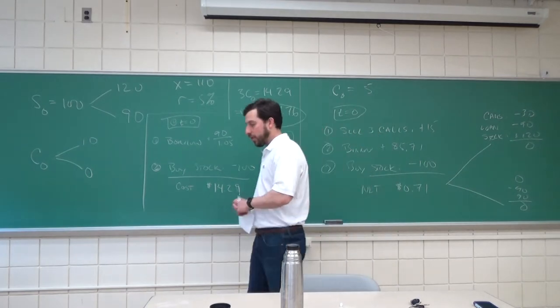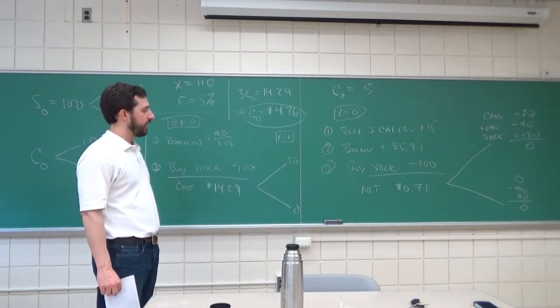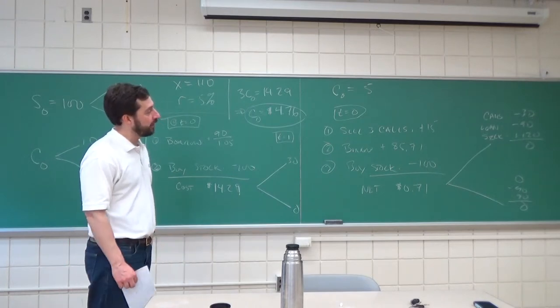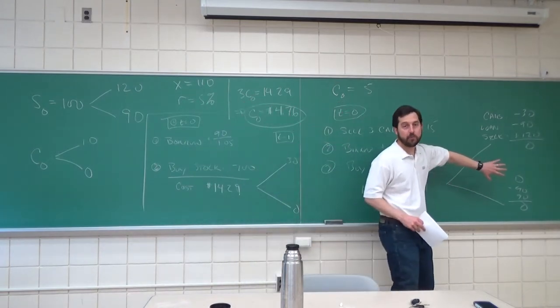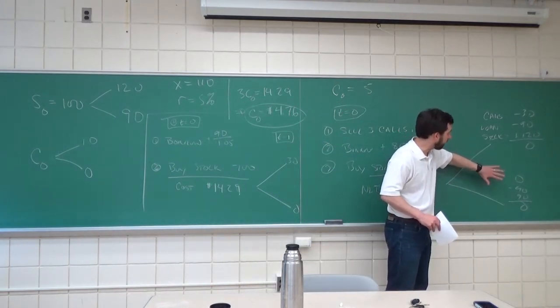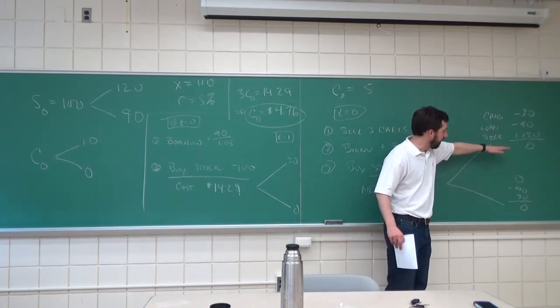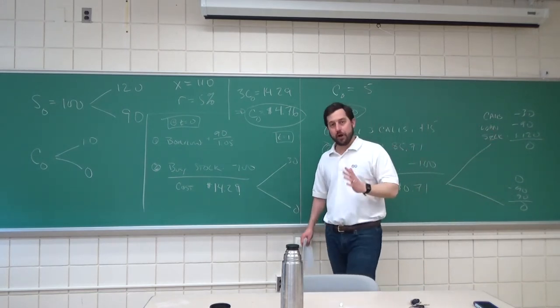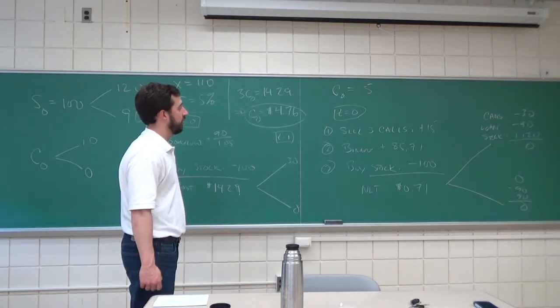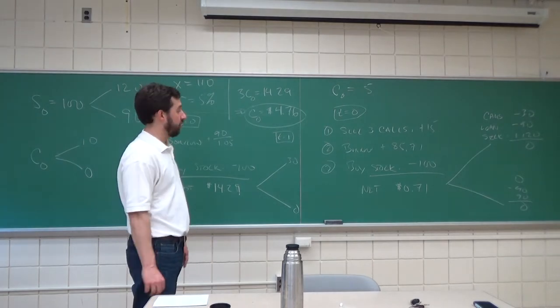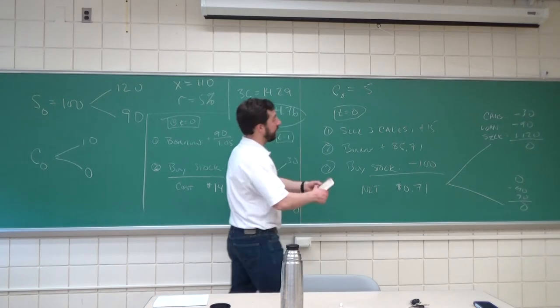We trade in such a way that at time zero, we net 71 cents, and at time one, no matter what state of the world is, we have no probability of loss. Our cash flow is zero at time one. Again, these are the two states of the world, so no matter what happens, my cash flows are zero. So, proper arbitrage. Of course, you can also do this, and this would be a nice exam question on setting this up, a fairly easy exam question.